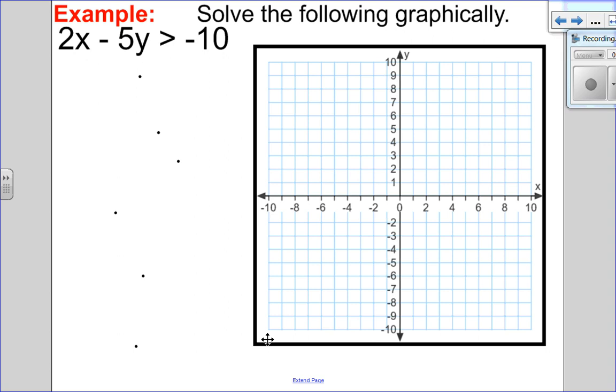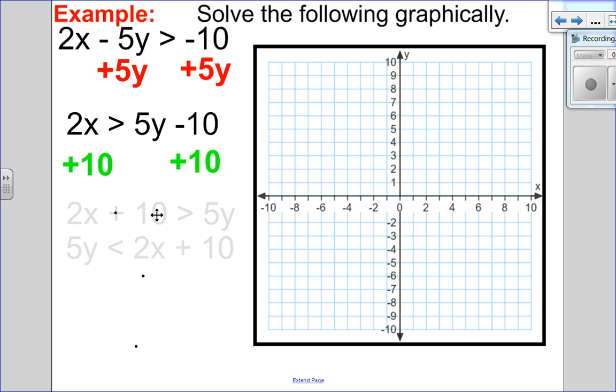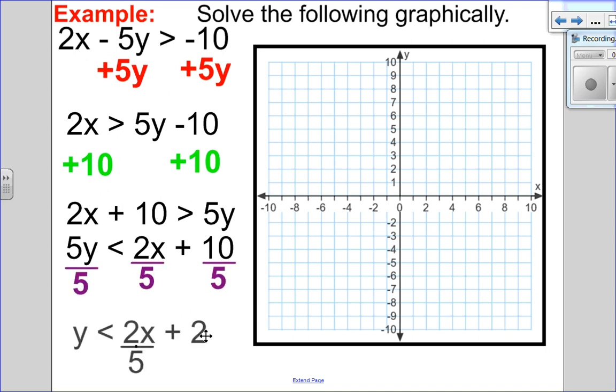In this one here, I need to isolate y, but it's negative here. I'm going to add 5 to both sides. I get the inequality 2x greater than 5y minus 10. Let's get rid of this negative 10 by adding 10 to both sides. I get 2x plus 10 greater than 5y. Or you can write it as 5y less than 2x plus 10. To finish this off, I just have to divide everything by 5, and here is my inequality y less than 2 fifths x plus 2.